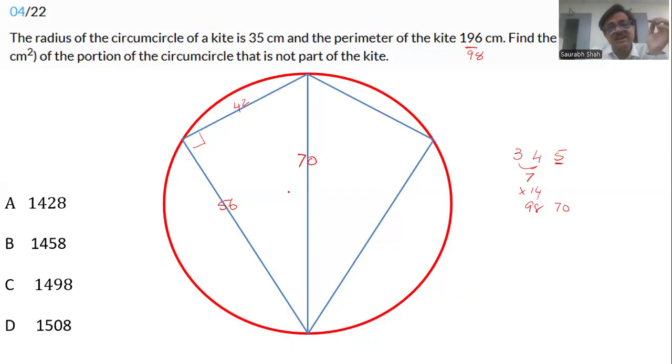The question was the area of the circle outside the kite. First let's find the area of the circle. Area of the circle is π, 22 by 7 times R squared, 35 times 35. That gives us 5 times 22, 110 times 35. 5 plus 3 gives us 8. How do we multiply by 11? Just add 3 and 5, so 3850. This is the area of the circle.